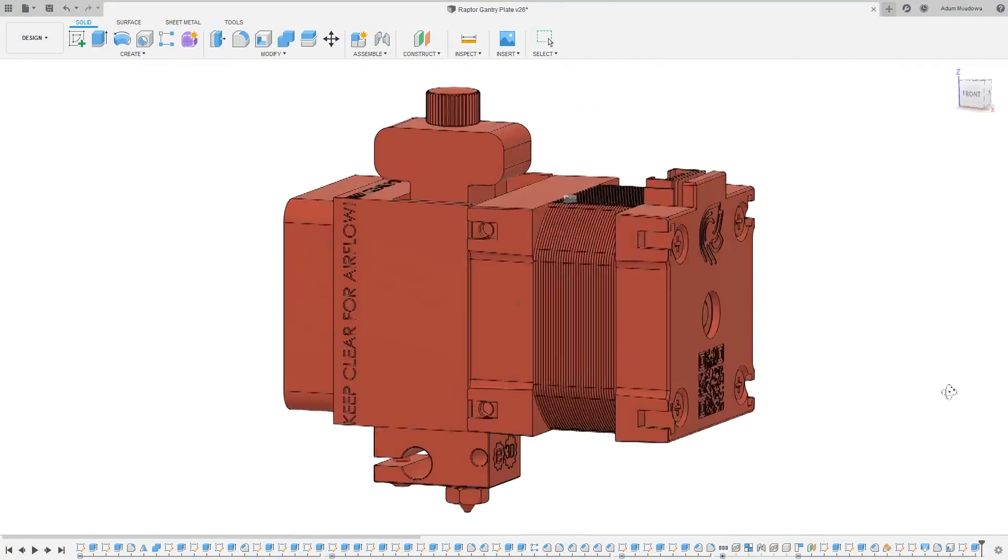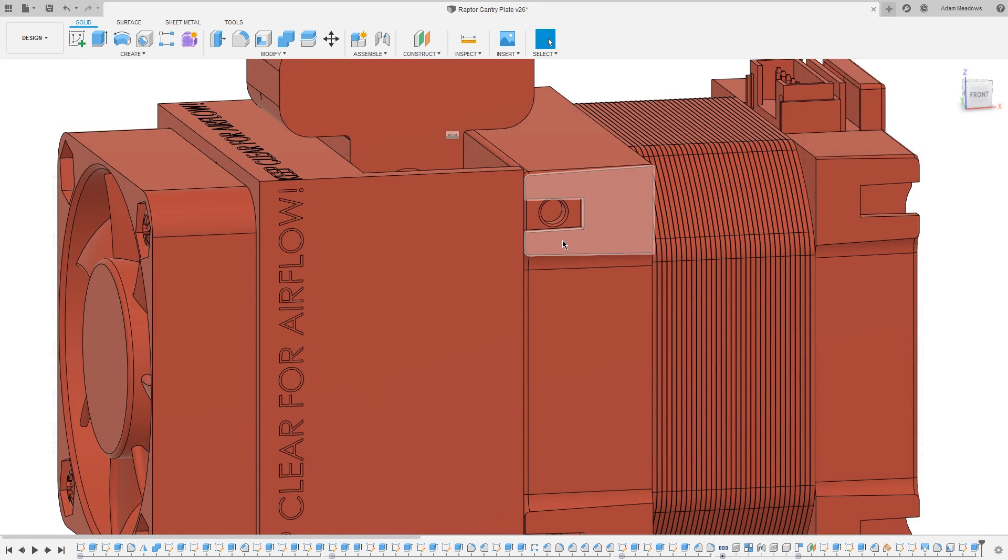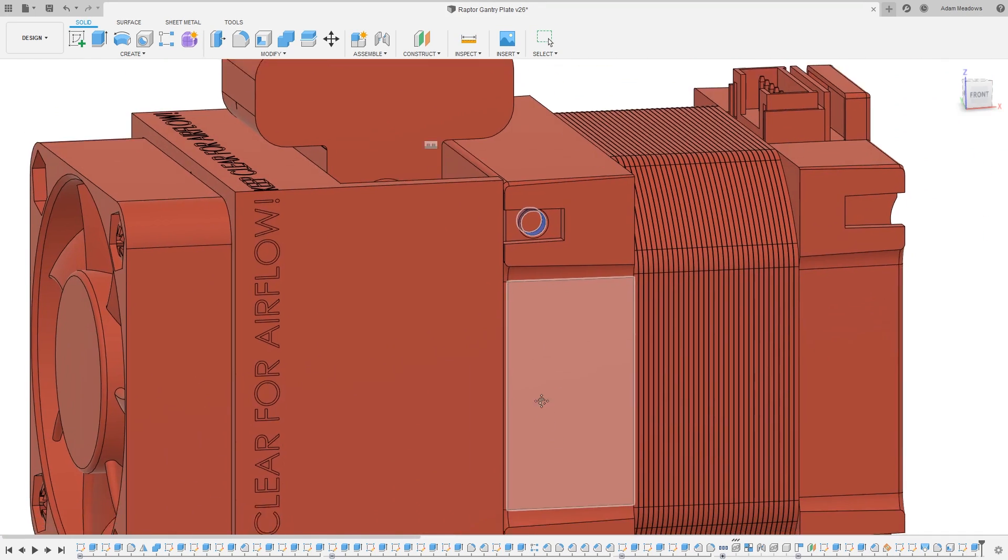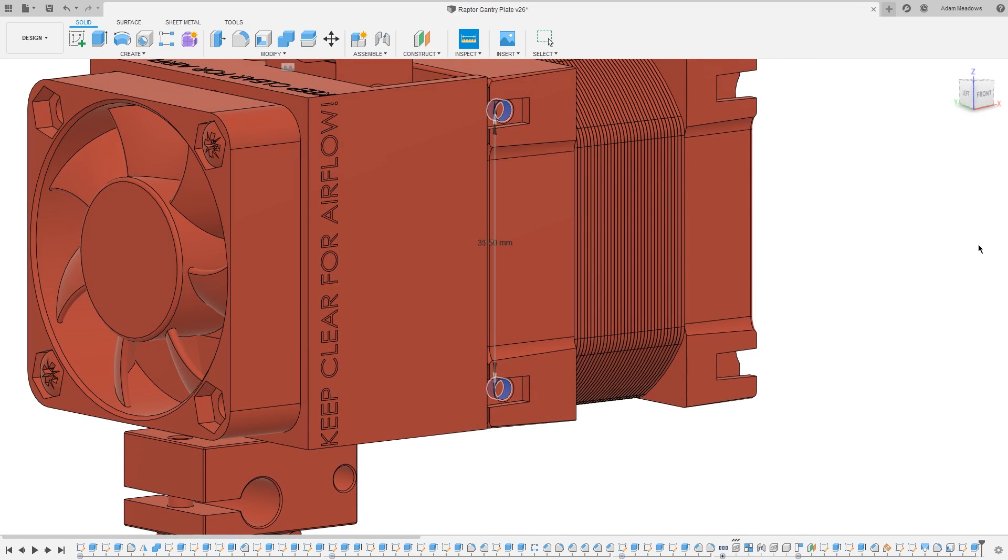Fortunately, the E3D Hemera is on the path towards open source. I believe that's the final intention, but I don't think it's quite fully there yet. But luckily, E3D do have a model on Thingiverse, which we can download and use. For now, the main information I really need from it is the mounting hole position. So I can just measure the distance between those and that information I can use in my design in the next step.